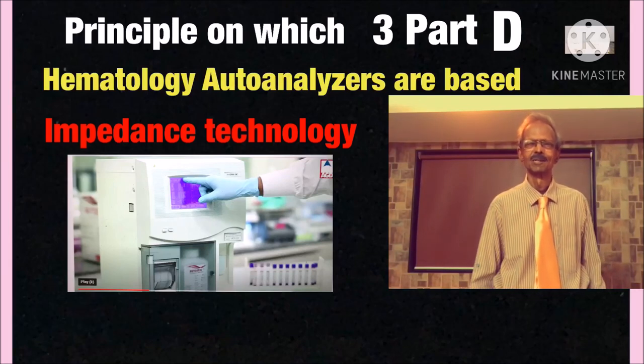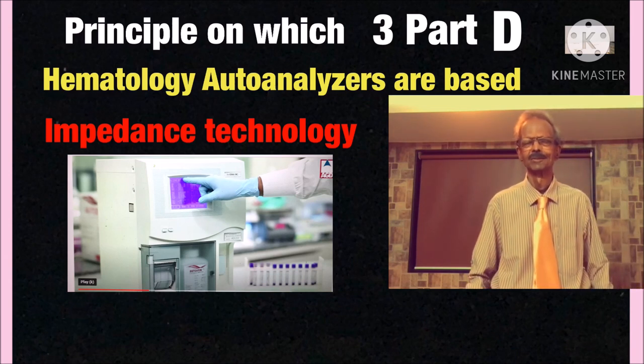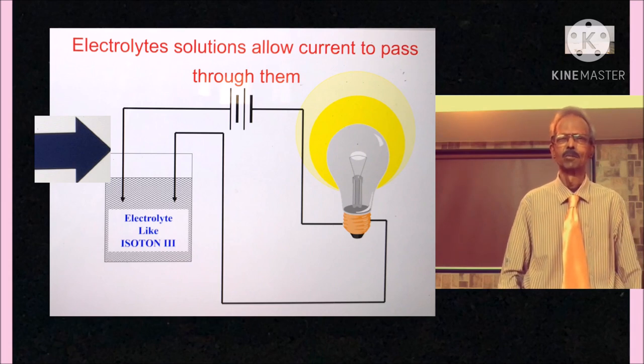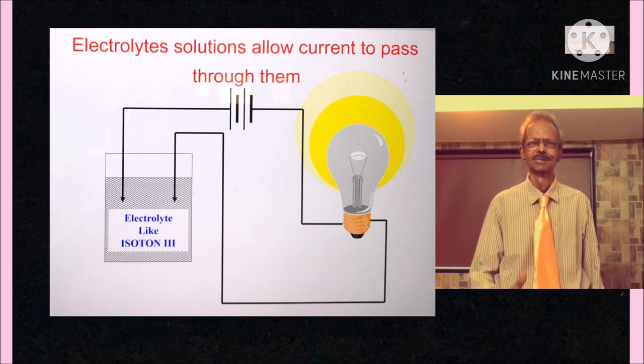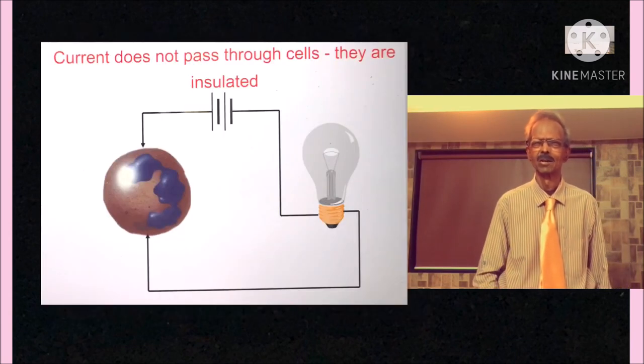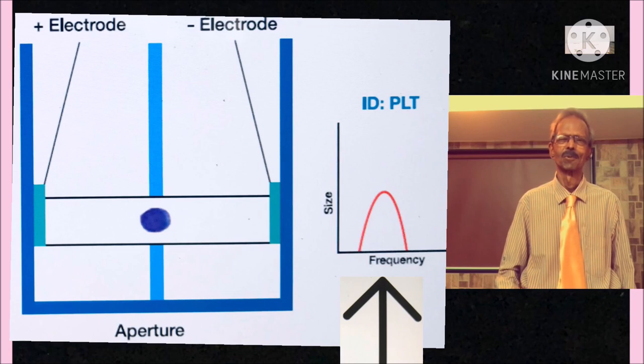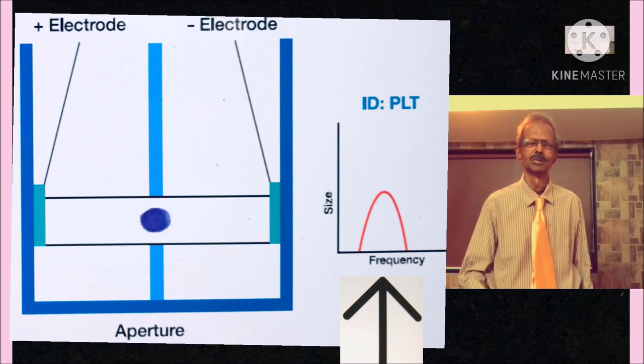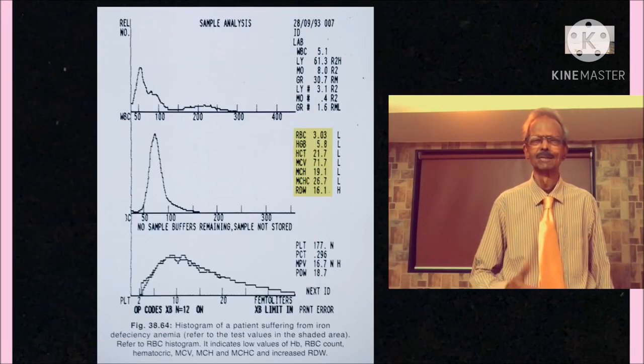Well, principle of three-part differential hematology auto-analyzer is based on impedance technology and this can be explained as follows. If two electrodes are dipped in electrolyte solution and connected, electrical current flows as you can see from the glowing of a bulb. But if a blood cell comes in the way, then current will not flow and impedance, resistance is created which is displayed as a graphic spike as you can see on the left-hand side. Each spike is equivalent to one cell and the area of spike is directly proportional to the size of the cell. Cells are then counted per liter of blood.